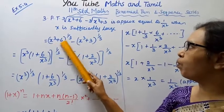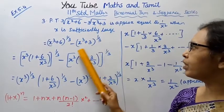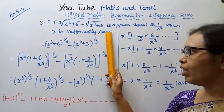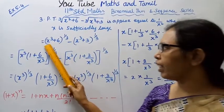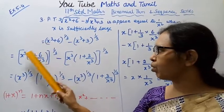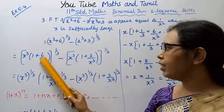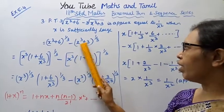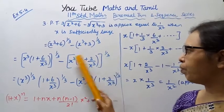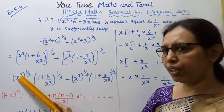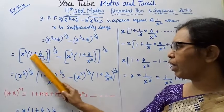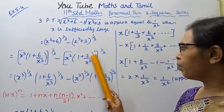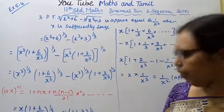We rewrite the expression as (x³ + 6)^(1/3) minus (x³ + 3)^(1/3). Taking x³ common, this becomes x³ common: (1 + 6/x³)^(1/3) minus x^(1/3) times (1 + 3/x³)^(1/3). Since x is sufficiently large, we can apply the binomial theorem.